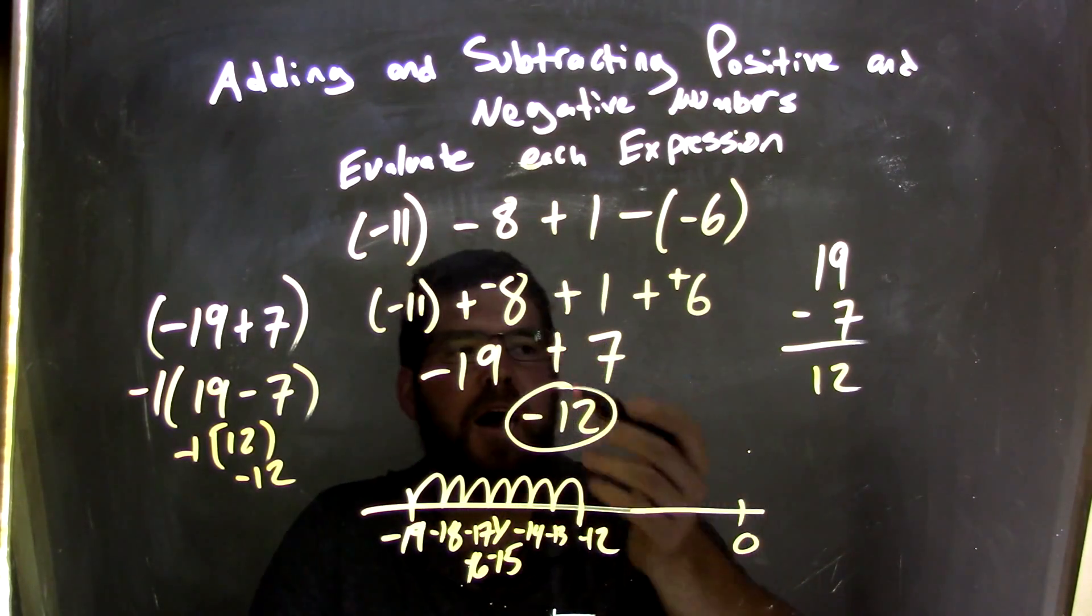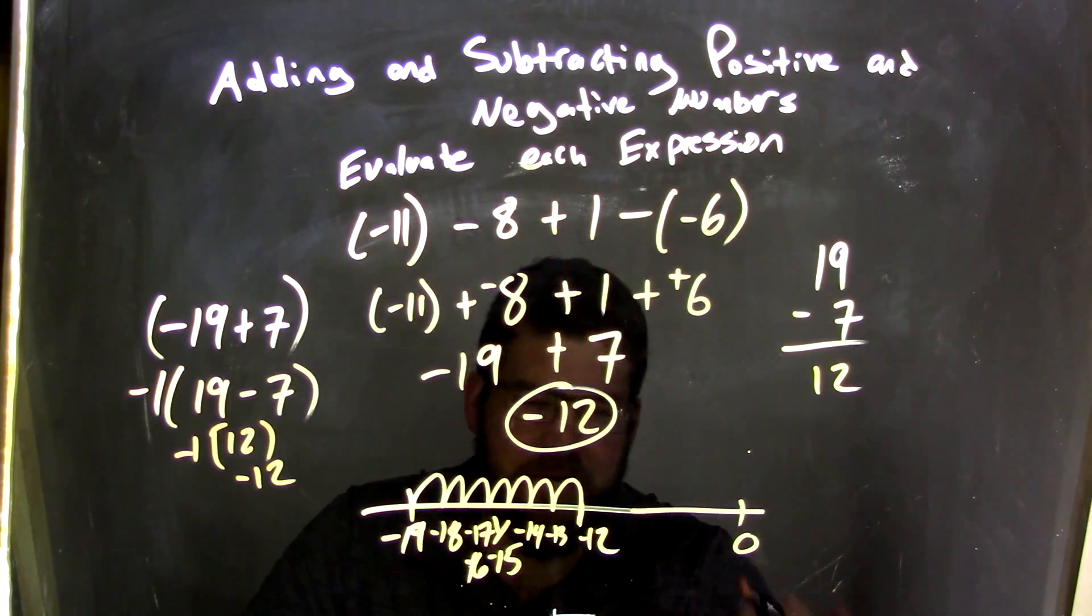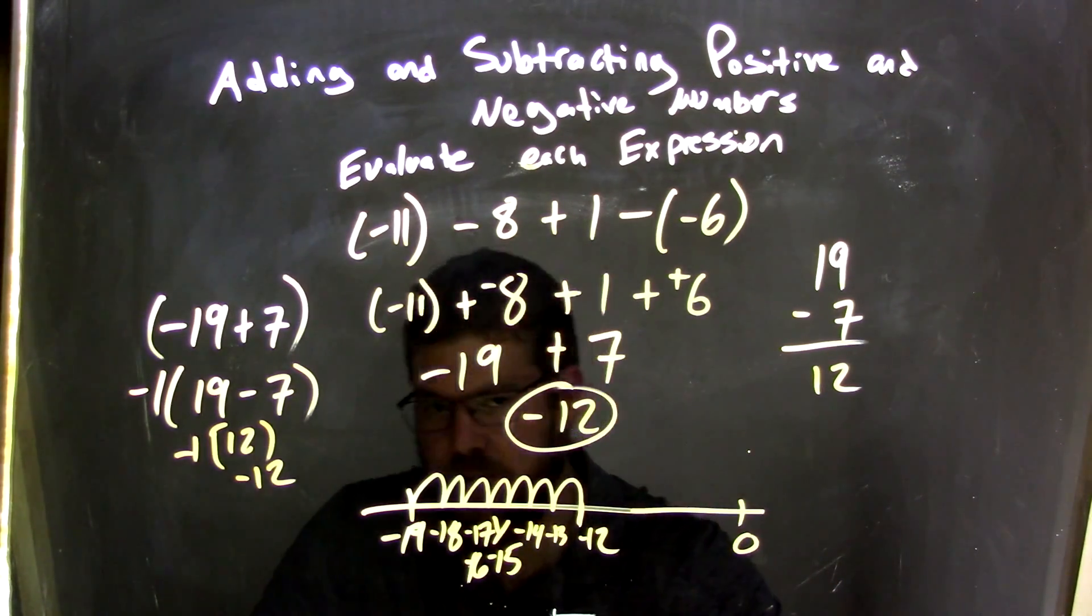Sometimes I just do that with the number line, or you practice enough, you just kind of recognize that 19 and 7 apart is 12, then there's your answer, negative.